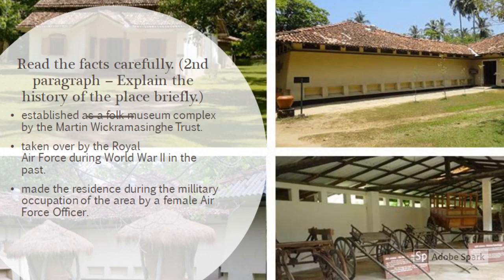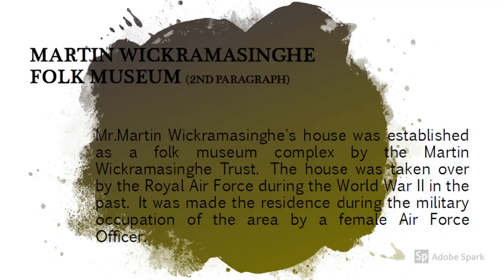Read the facts carefully to write the second paragraph. Explain the history of the place briefly. Facts: established as a folk museum complex by the Martin Vikramasingha Trust; taken over by the Royal Air Force during World War II in the past; made the residence during the military occupation of the area by a female Air Force officer. Based on the facts given, you may use the passive form of simple past tense. For example: Mr. Martin Vikramasingha's house was established as a folk museum complex by the Martin Vikramasingha Trust. The whole paragraph is written in simple past tense passive form.